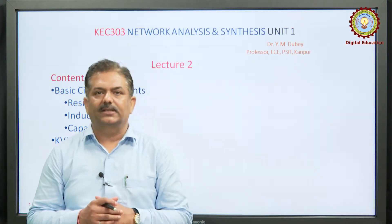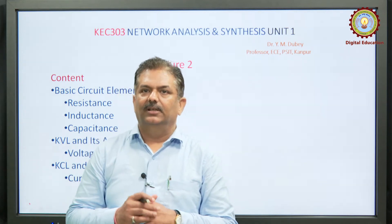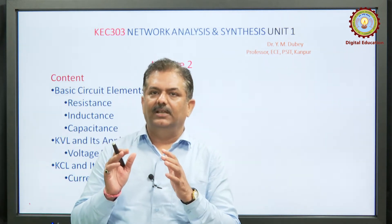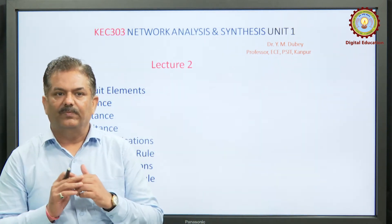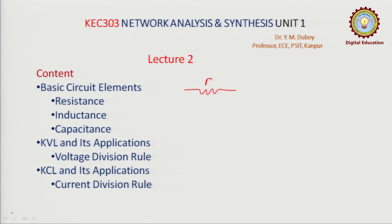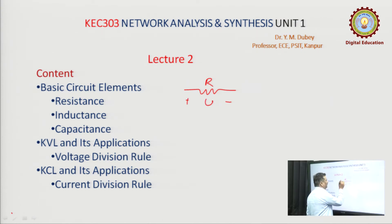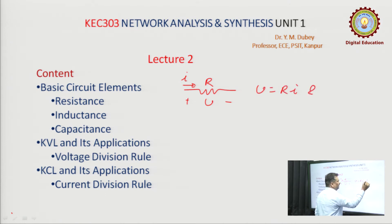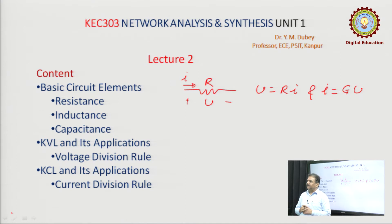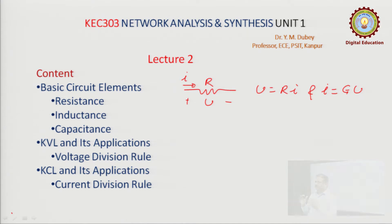In the last lecture, we discussed about the basic circuit elements: resistance, inductance, and capacitance. Resistance is basically opposition offered to current flow. In resistance, voltage and current are related by Ohm's law — V equals R times I, and I equals G times V. Resistance is an energy dissipating device; energy dissipation takes place in this element.